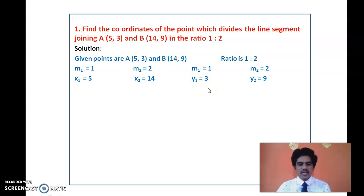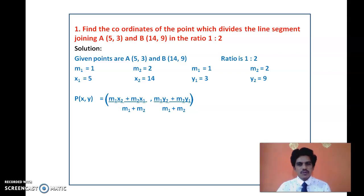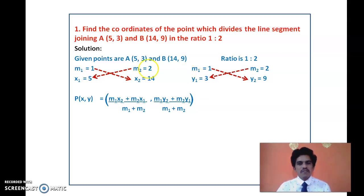The formula is x = (M1·x2 + M2·x1) / (M1 + M2) and y = (M1·y2 + M2·y1) / (M1 + M2). Substituting: x = (1×14 + 2×5) / (1 + 2). This forms the x-coordinate of P.